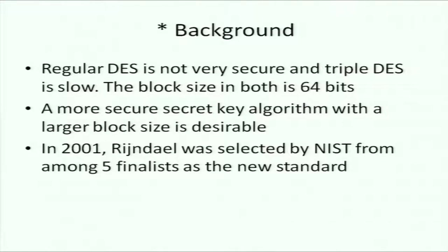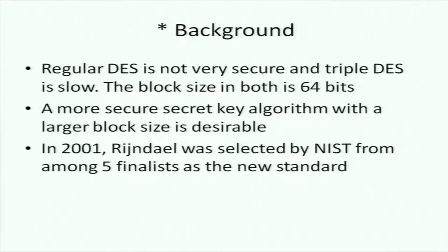Regular DES was not deemed to be very secure and triple DES is slow. The block size in both cases is 64. AES actually uses 128 bits — using the key two or three times, but the key is the same in two cases. A more secure secret key algorithm with a larger block size is desirable.